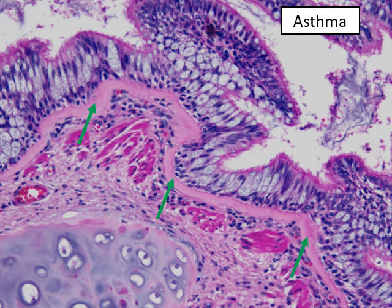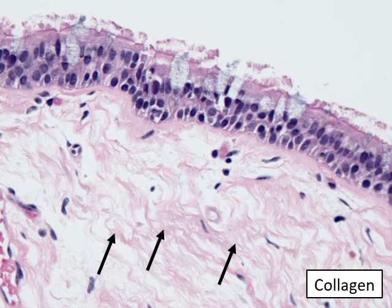This is the normal basement membrane. The asthmatic basement membrane is notably thicker. Another typical change in asthmatic mucosa is marked goblet cell hyperplasia — meaning a significantly increased number of goblet cells. This goblet cell hyperplasia partly accounts for the increased mucus in asthma that plugs up the respiratory tract and makes breathing difficult. Basement membrane thickening and goblet cell hyperplasia are two pathologic changes visible in this disease.